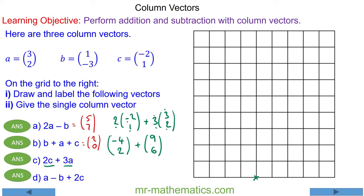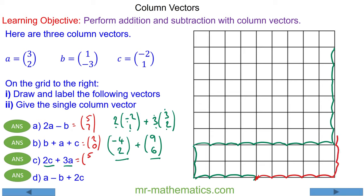Starting here we can go 4 to the left and 2 up, and now we're going to go 9 to the right and 6 up. So our resultant vector is 5 to the right and 8 up.